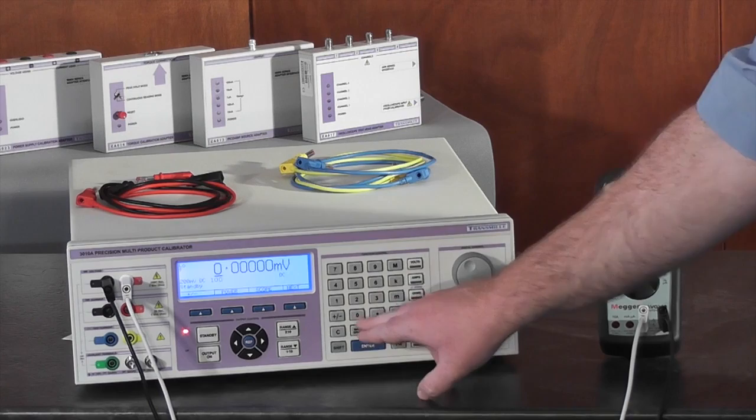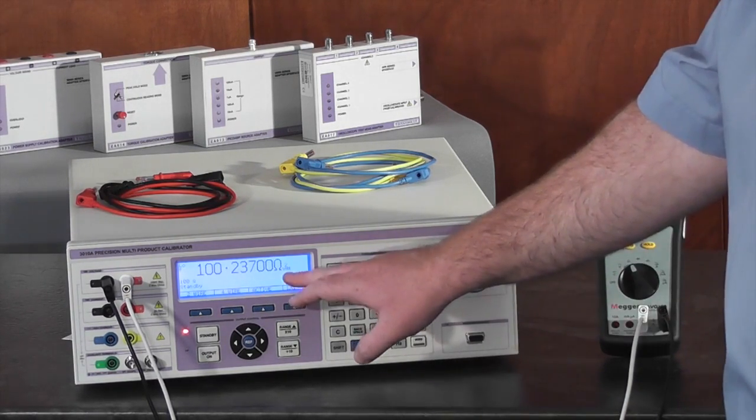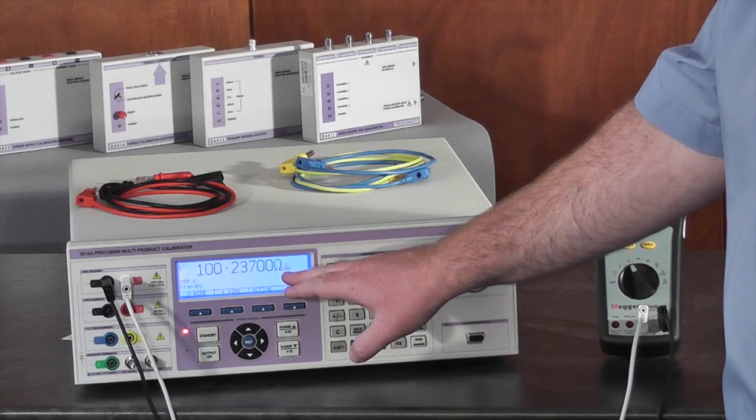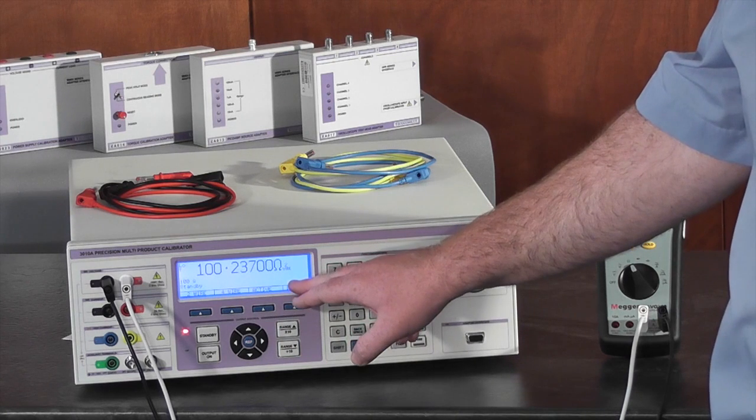The calibrator defaults to 2 wire ohms output. As you can see, the output is not exactly 100 ohms. This is due to the value being a true resistor.